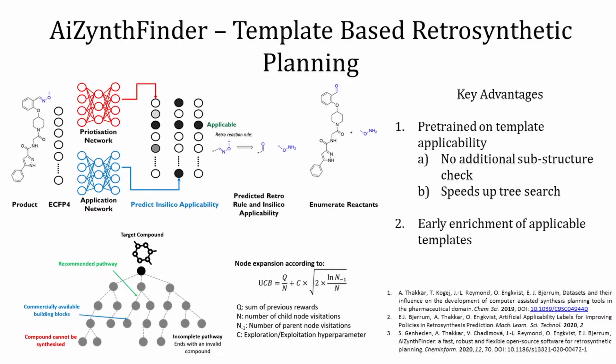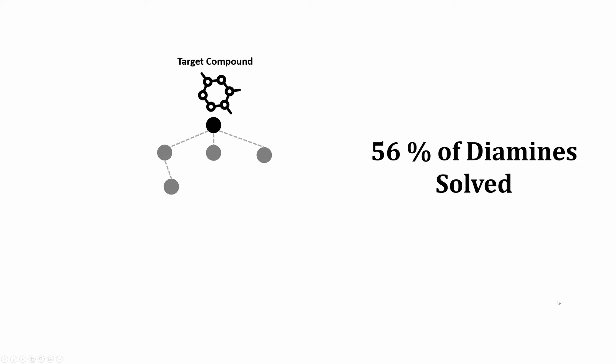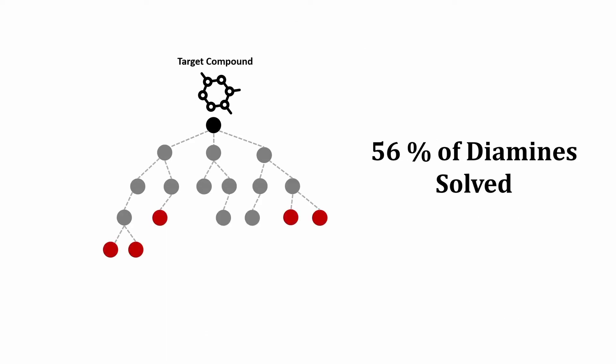To do this, we've applied a template-based retrosynthetic planning tool called ARIZINFFinder, which we developed in collaboration with AstraZeneca. In contrast to previous approaches, we prioritized not only the reactions leading to the desired transformation at each step, but whether they can be applied in silico. This has two key benefits: first, it speeds up the tree search as it negates an additional substructure check; and secondly, it enriches the prioritization due to more information being present in the output vectors. We use this approach to predict multi-step synthesis to the compounds in the diamine database, resulting in routes for 56% of the compounds.